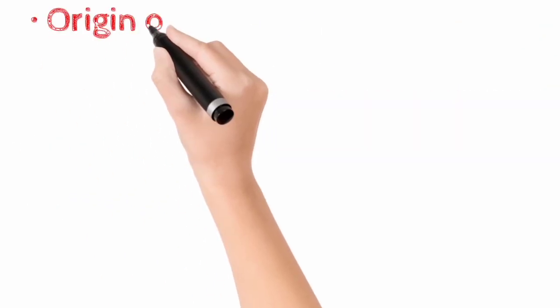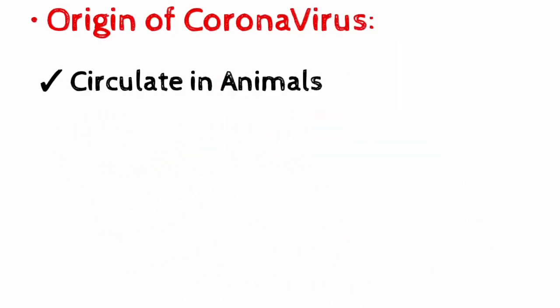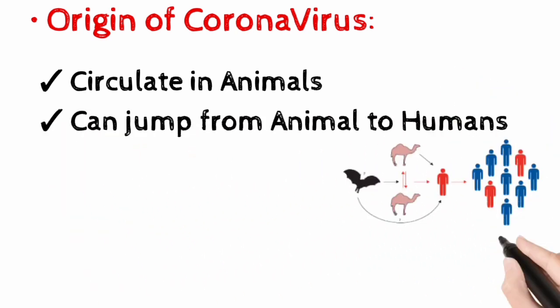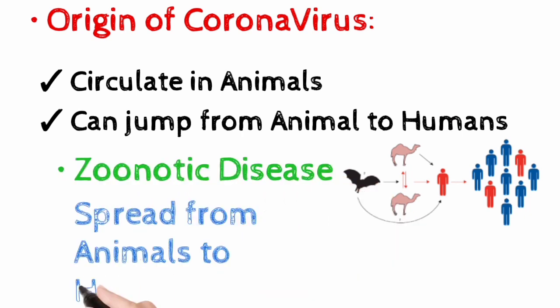If we talk about the origin of coronavirus, coronaviruses circulate in a range of animals and sometimes these viruses can make the jump from animals to humans and are called zoonotic disease, a disease that spreads from animals to humans.